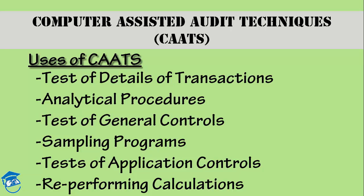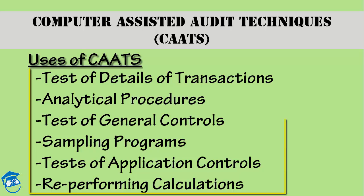People usually ask me: what is the use of CATs? There are six major uses when you incorporate CATs in your auditing procedures. Number one is the test of detail of transactions. Number two is analytical procedures. Number three is test of general controls. Number four is sampling programs. Number five is test of application controls. And number six is re-performing calculations.